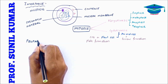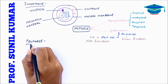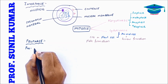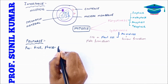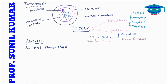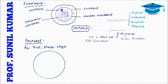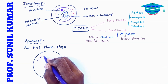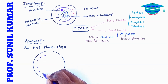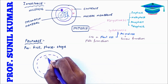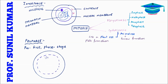Let's understand the stages of mitosis. First we have prophase. 'Pro' means first and 'phase' means stage, so prophase is the first stage of mitosis. Here the nuclear membrane and the nucleolus start disappearing slowly.